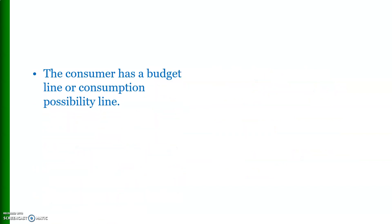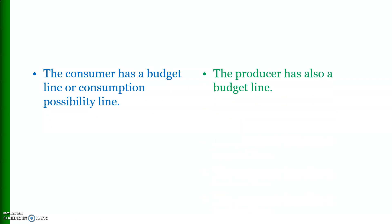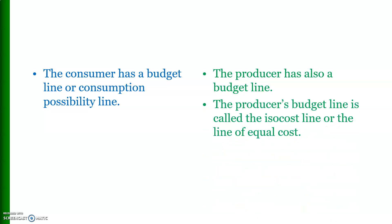The consumer has a budget line, also called the consumption possibility line. The producer also has a budget line, which is known as the isocost line.